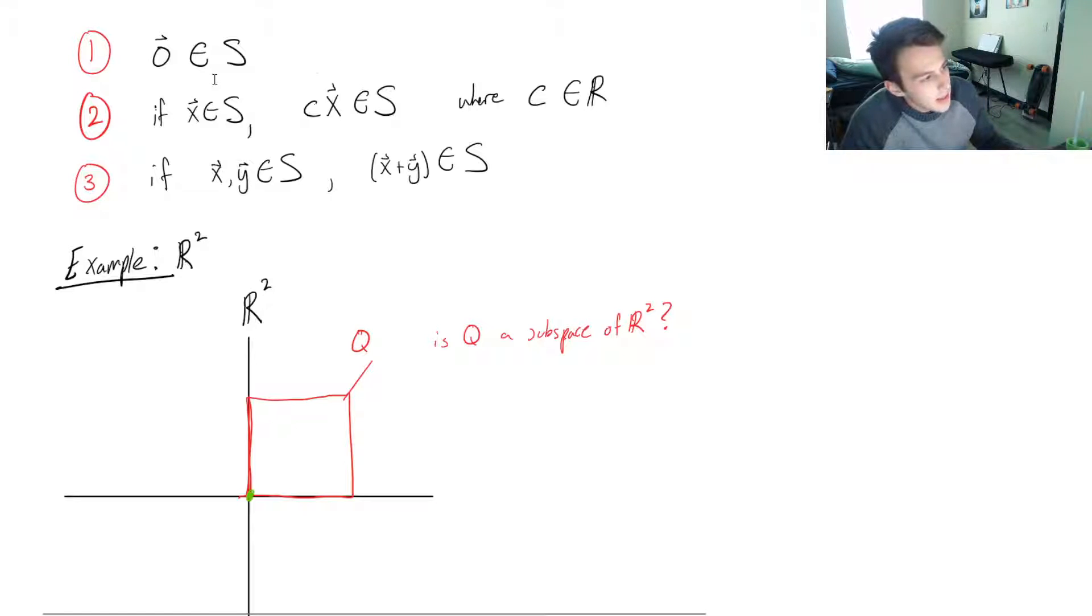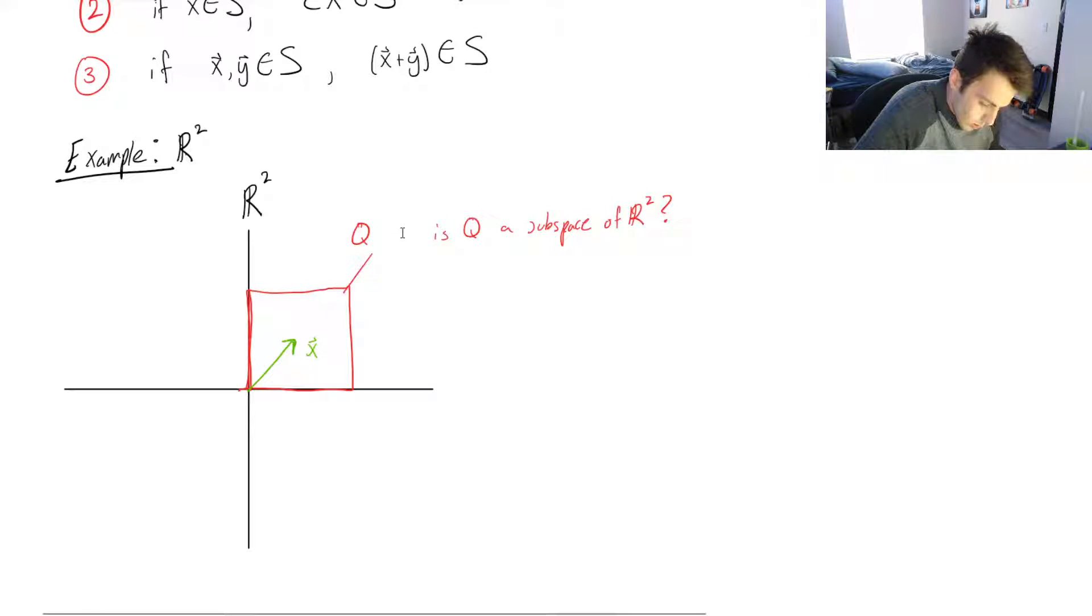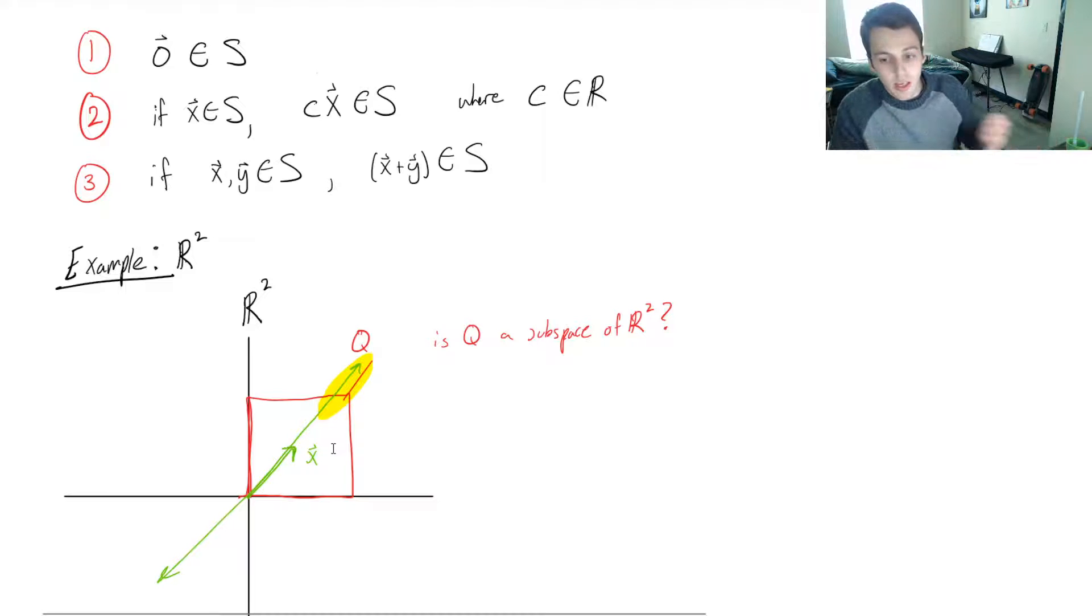The second one, if X is in the subspace, could I scale X by any real number and would it still be in the subspace? So let's say I had a vector X, because I know X is in the subspace. This is X. If I were to scale X by anything, well, what if I scaled it all the way out here? Well, that's not in the subspace, because this portion out here, that's not in it. What if I scaled it the other way, this way? I'm not in the subspace anymore, either. So it fails the second condition. Another way of thinking of it is if you want to add two vectors in the subspace, you could definitely come up with some combinations where if you were to add those two vectors, it would be outside of Q.